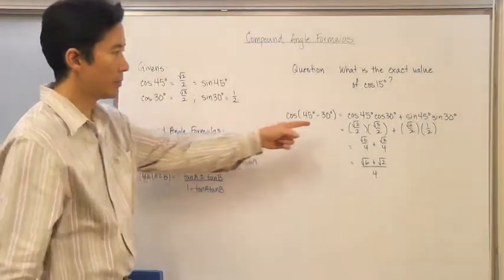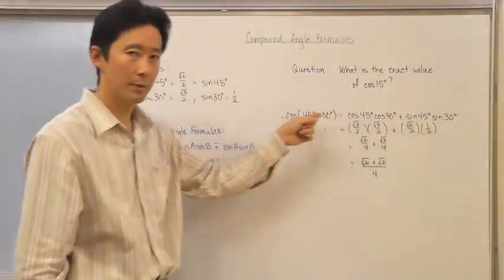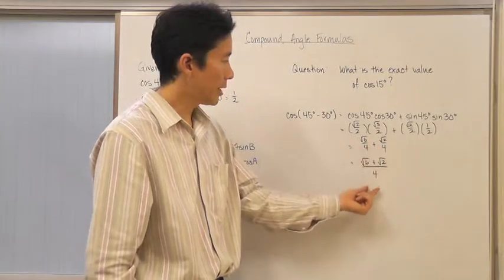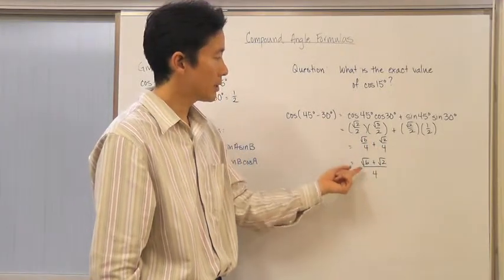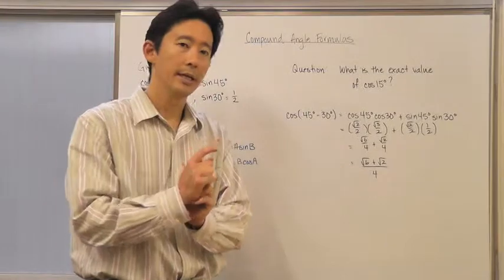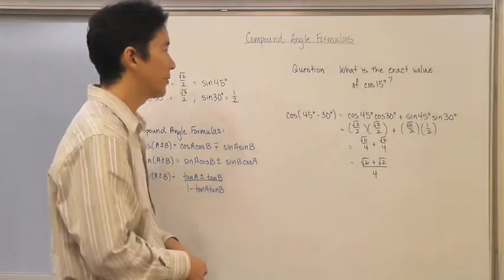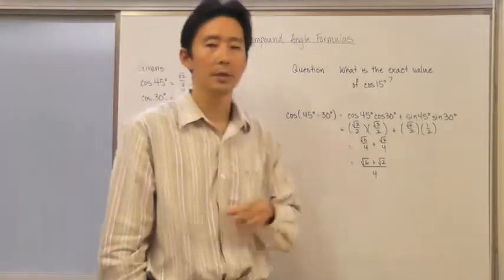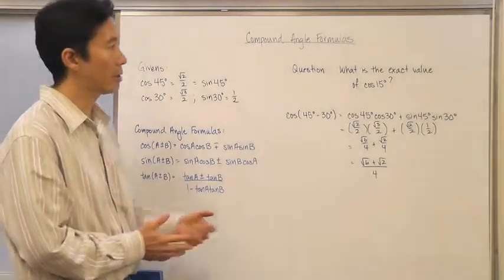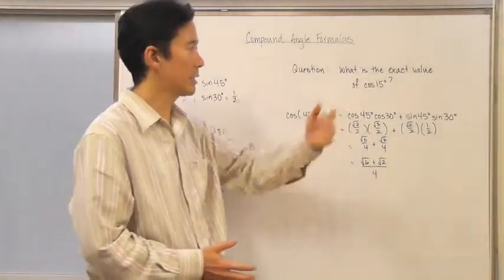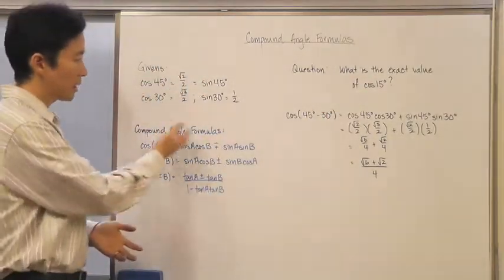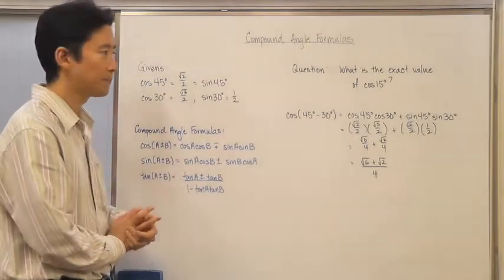We know the exact representations of all those values. Simplifying, we get the square root of 6 plus the square root of 2 over 4. That is the exact value of the cosine of 15 degrees, and that is how we use the compound angle formulas to answer this question.